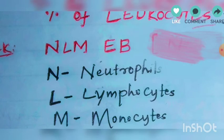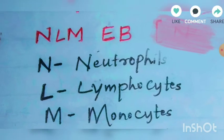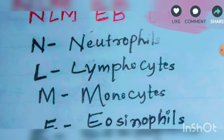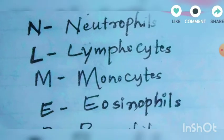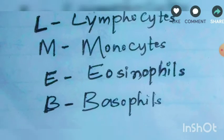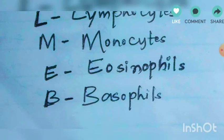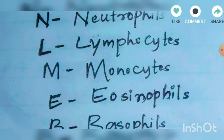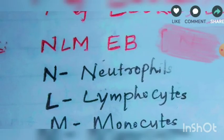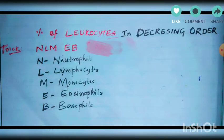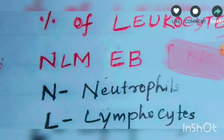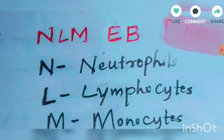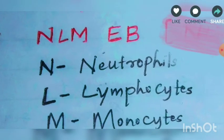Now here N is neutrophils, L is lymphocytes, M is monocytes, E is eosinophils, B is basophils. So NLMEB is the trick.